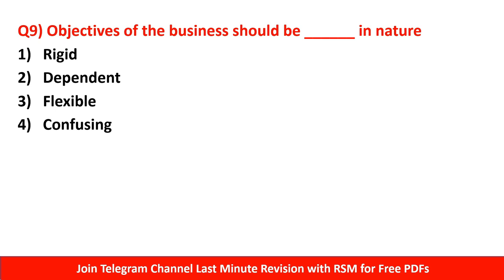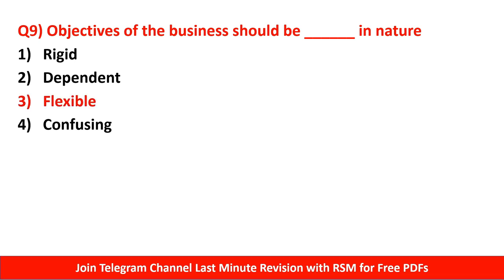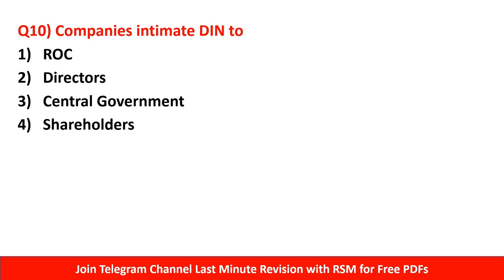Objectives should always be SMART — Specific, Measurable, Achievable, Realistic, and Time-bound. One MCQ asks how objectives should be in nature — Rigid, Dependent, Flexible, or Confusing. The right answer is that objectives should be flexible in nature.